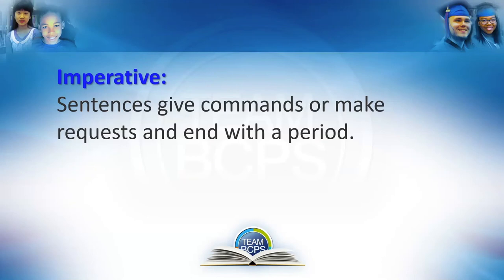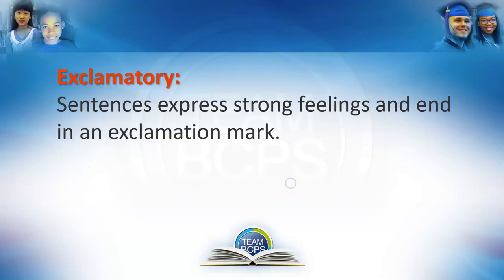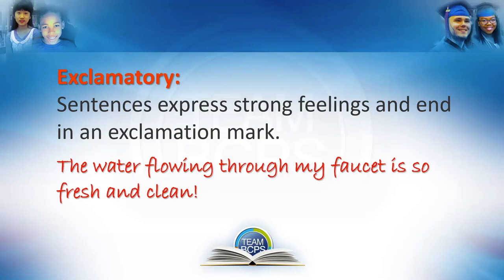Imperative sentences give commands or make requests and end with a period. Example: 'Treat the water with chemicals to kill bacteria and viruses.' It's a command — if you want clean water you're going to have to use chemicals to kill the bacteria and viruses. And lastly, exclamatory — or as Americans say, exclamatory — sentences express strong feelings and end with an exclamation mark. Example: 'The water flowing through my faucet is so fresh and clean!' Sometimes it's called an exclamation point. We're excited because the water is clean.